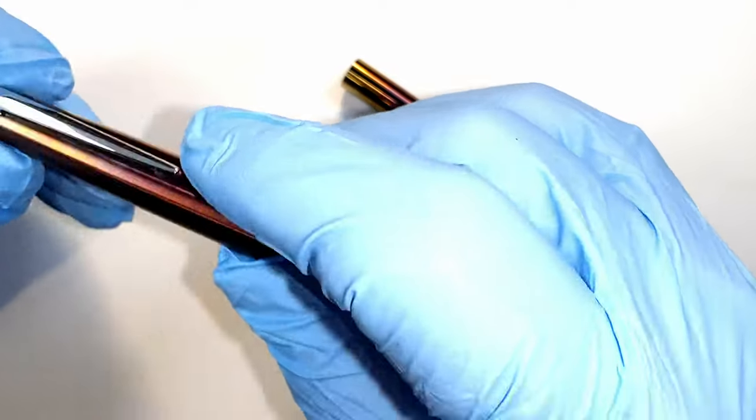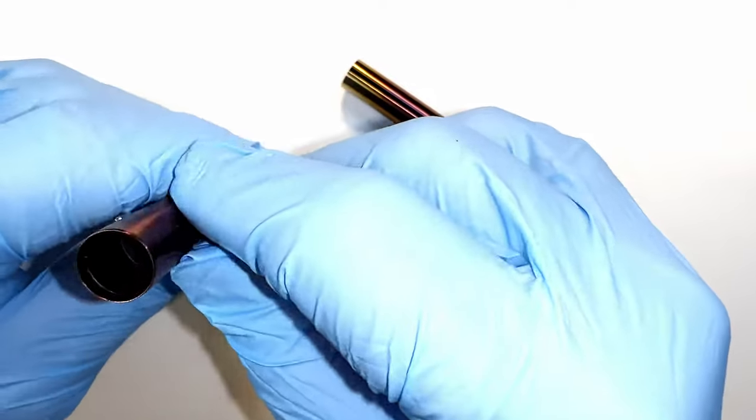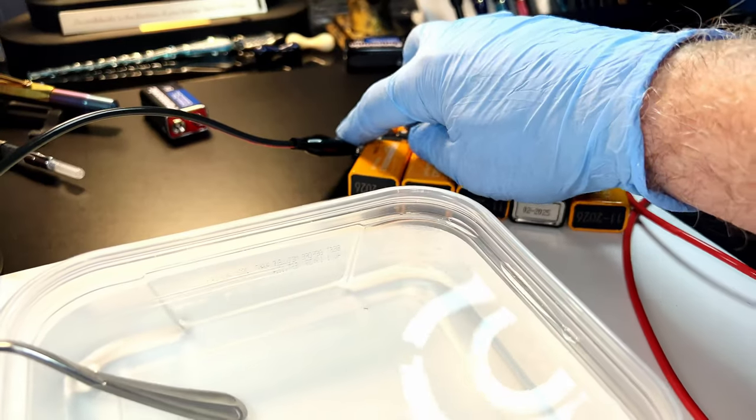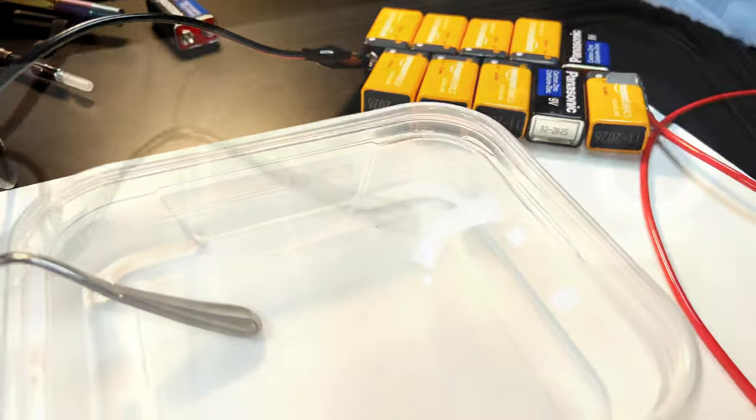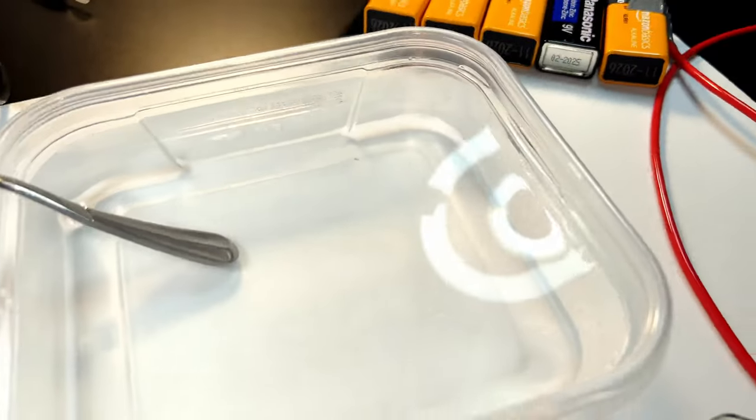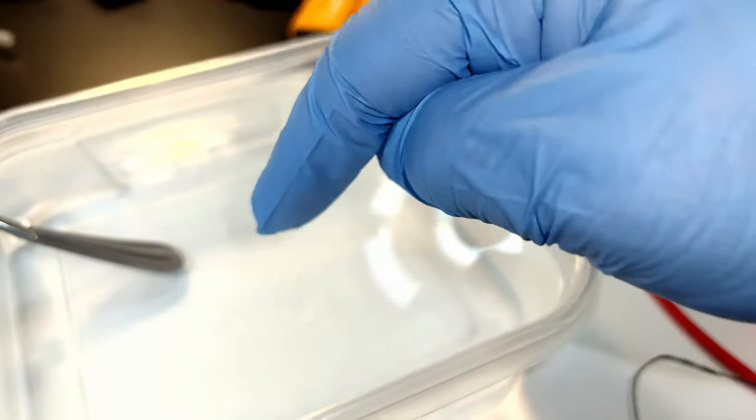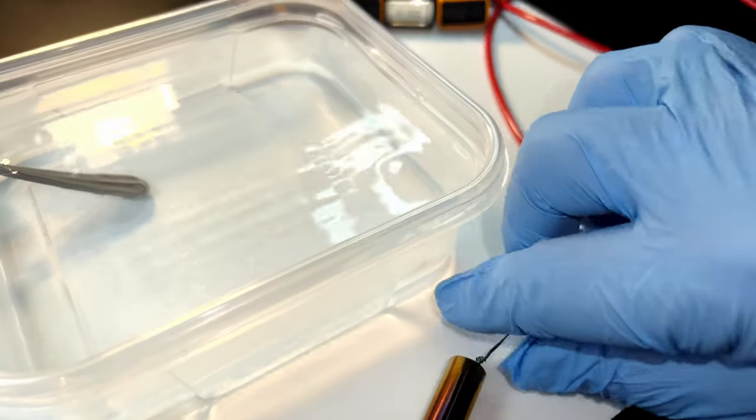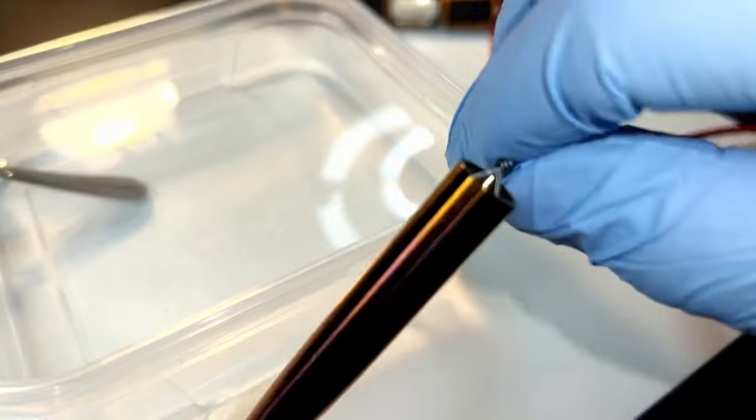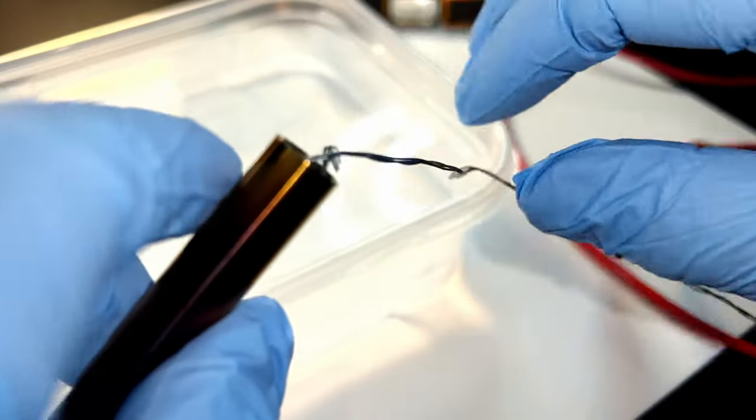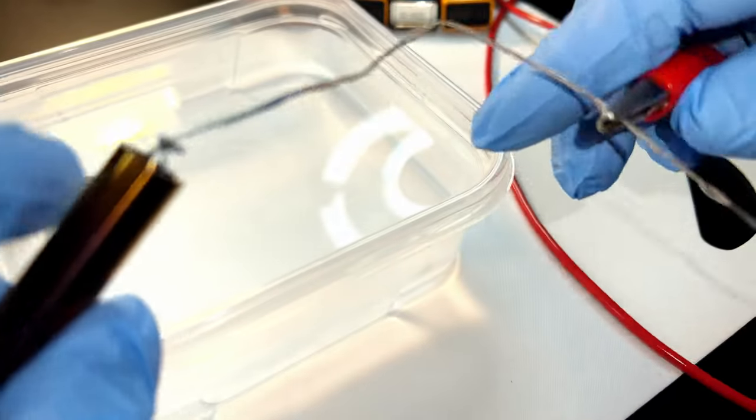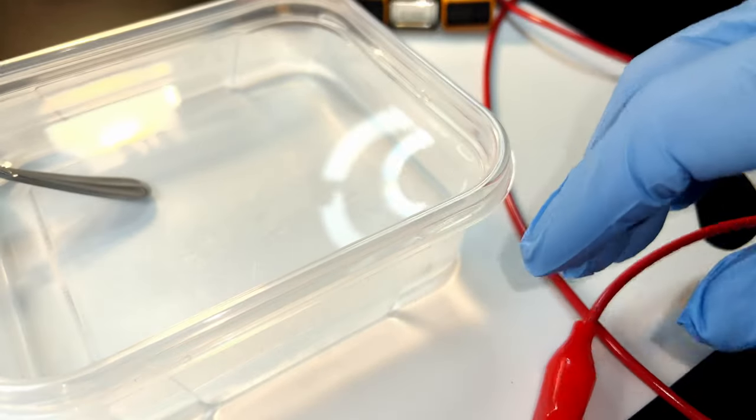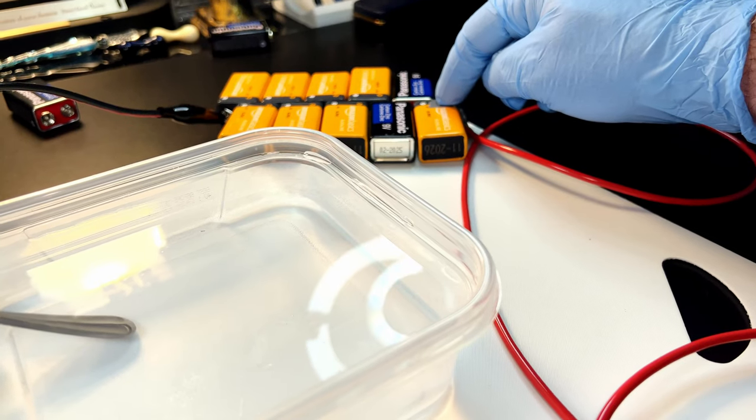So as before, I've got the anode attached to a fork that sits in the water which has baking soda in it, and then I have my barrel attached to some titanium wire which is attached to an alligator clip, which is then attached to the positive terminal.